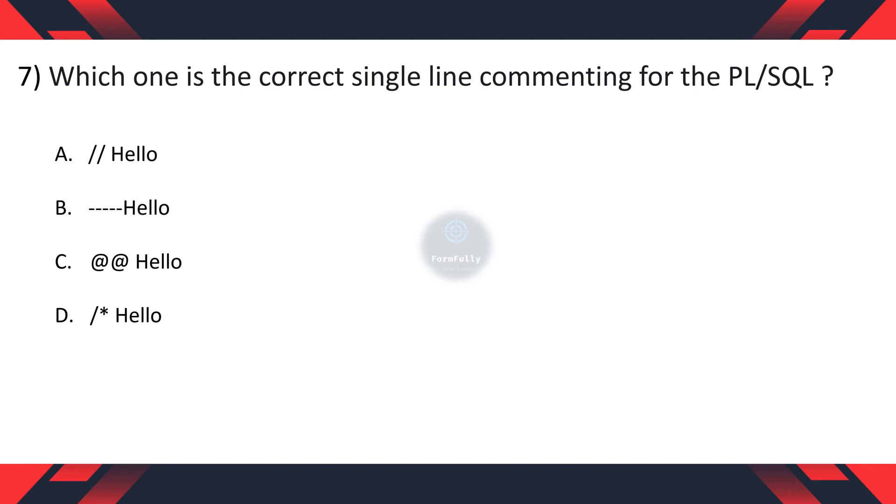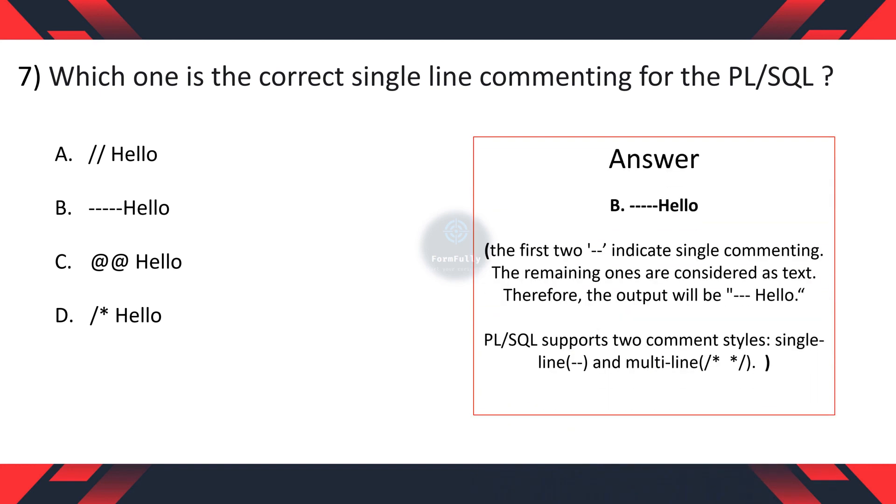Question 7: Which one is the correct single line commenting for PL-SQL? A: two slash hello, B: five times hyphen hello, C: two at the rate hello, D: slash star hello. The correct option is B: five times hyphen hello. Because the first two hyphens indicate single commenting and the remaining ones are considered as text. Therefore the output will be hyphen hyphen hyphen hello. Multi-line commenting starts with slash star and ends with star slash.